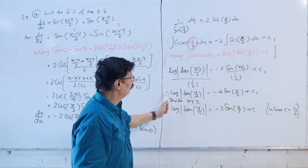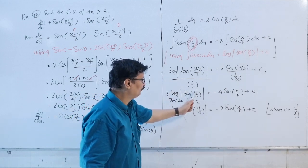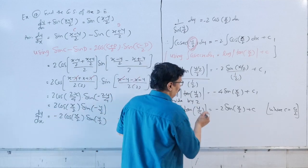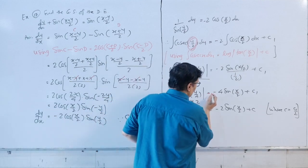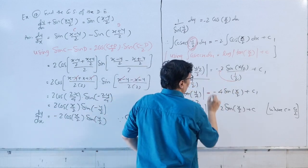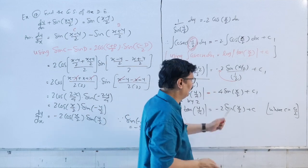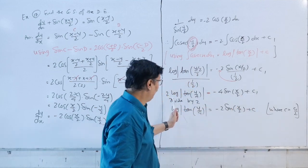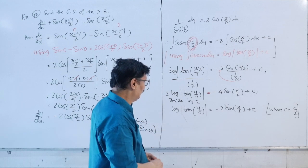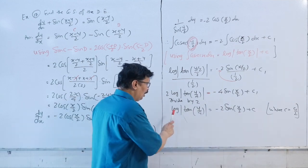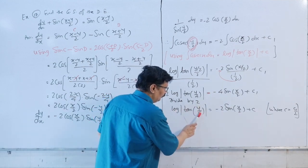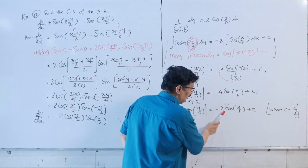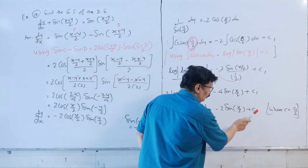So 2 times log|tan(y/4)| equals minus 4 sin(x/2) plus C. Dividing both sides by 2, we get the final general solution: log|tan(y/4)| equals minus 2 sin(x/2) plus C.